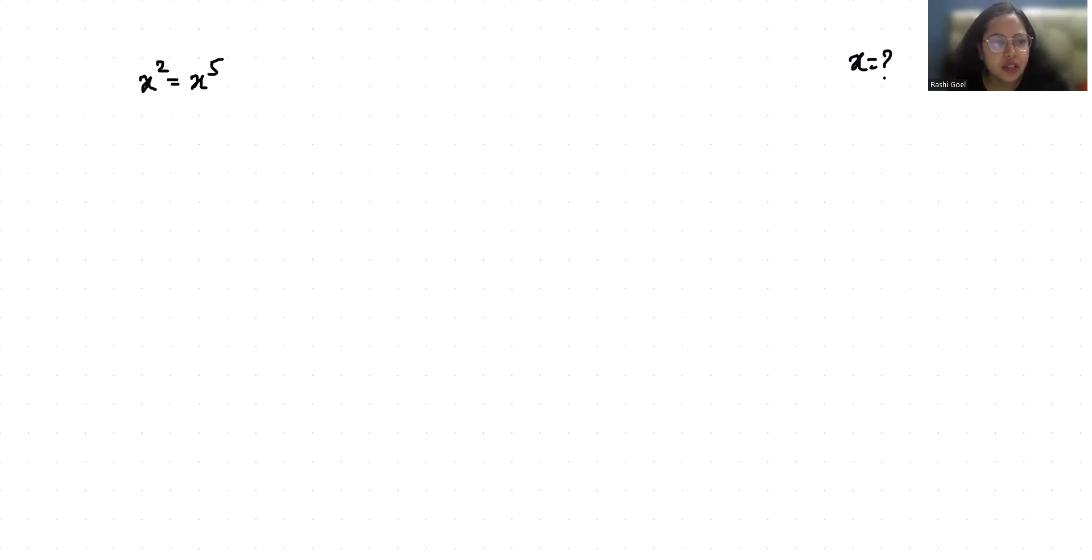We can write this as x to the power 5 minus x squared equals 0. Now if x squared is common, so x squared times x cubed minus 1 equals 0.